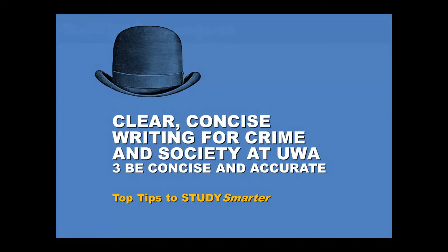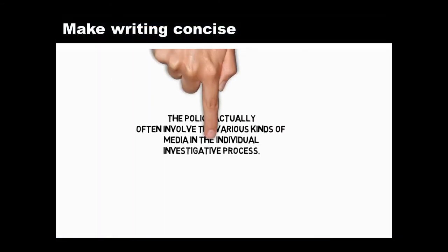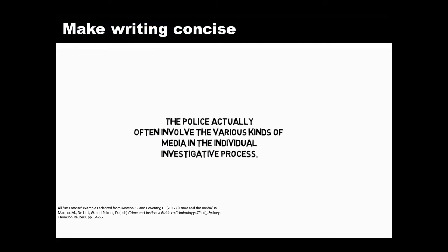We'll start by looking at some sentences that aren't concise. As you read each one, think about how to trim words and tighten expression. Pause the video if you need to. Here's the first example. It contains a number of vague words. Get rid of any vague words to make this sentence tighter and clearer.